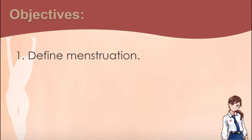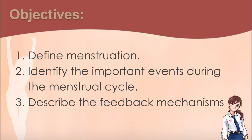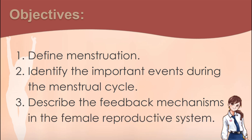The objectives for this lesson are as follows: 1. Define menstruation. 2. Identify the important events during the menstrual cycle. 3. Describe the feedback mechanisms in the female reproductive system.